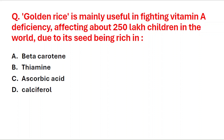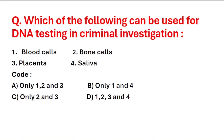Next question: which of the following can be used for DNA testing in criminal investigation? First: blood cells, second: bone cells, third: placenta, fourth: saliva. The correct answer is option D — all of these can be used for DNA testing during criminal investigation.